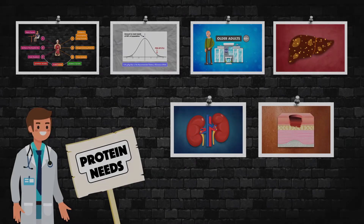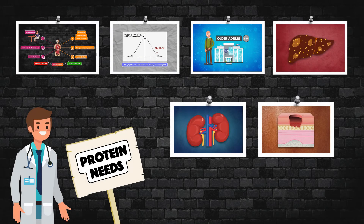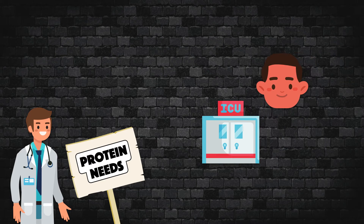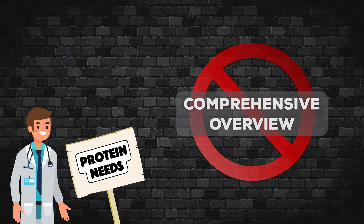Now that we've covered the basics of protein turnover, the RDA, and recommendations for older adults, cirrhosis, chronic kidney disease, and pressure injuries, we're going to explore the protein needs with critical illness.